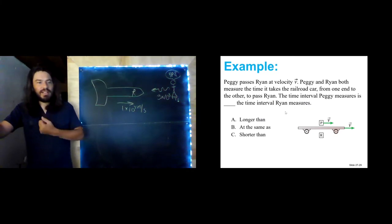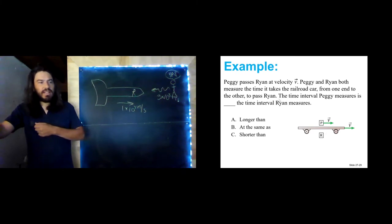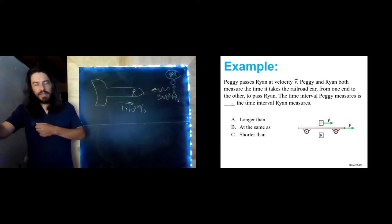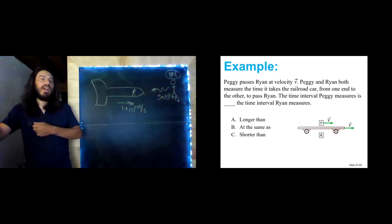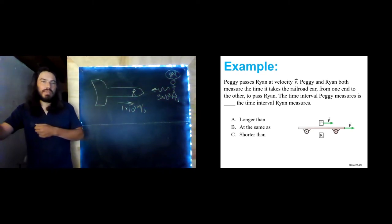You try: Peggy passes Ryan at velocity V. Peggy and Ryan both measure the time it takes the railroad car from one end to the other to pass Ryan. The time interval Peggy measures is greater than, less than, or the same as the time interval Ryan measures? Identify who measures the proper time.